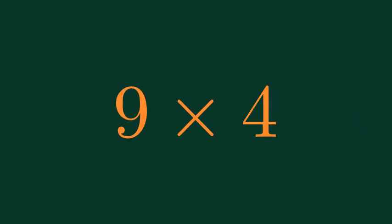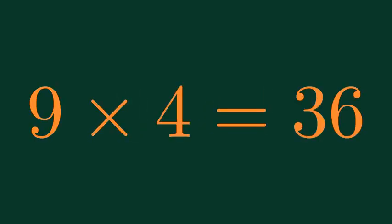9 times 9 is equal to 7. What is 9 times 4? 9 times 4 is equal to 36.